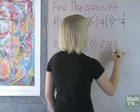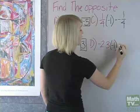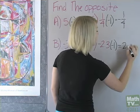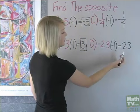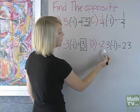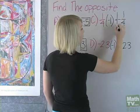We'll multiply by negative 1, which will give us a positive 2 thirds, which means that negative 2 thirds is the opposite of positive 2 thirds.